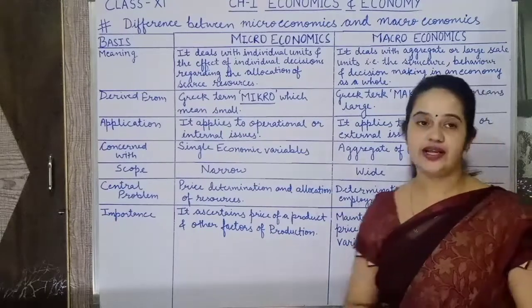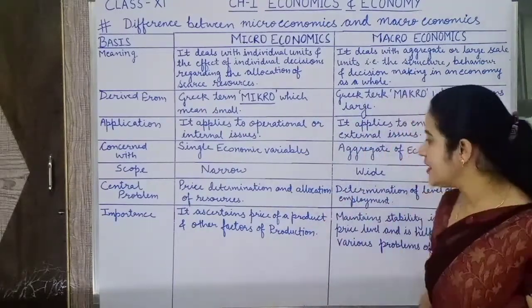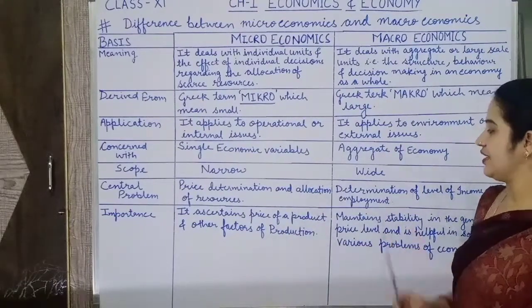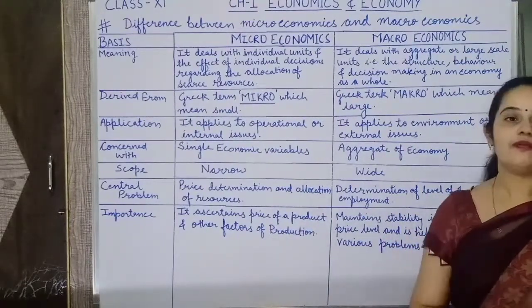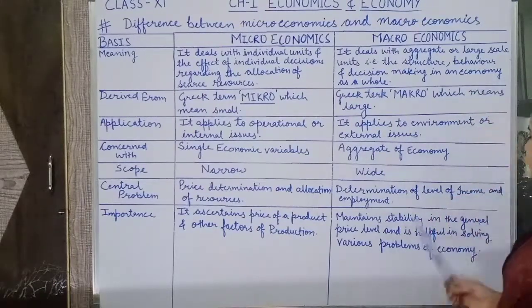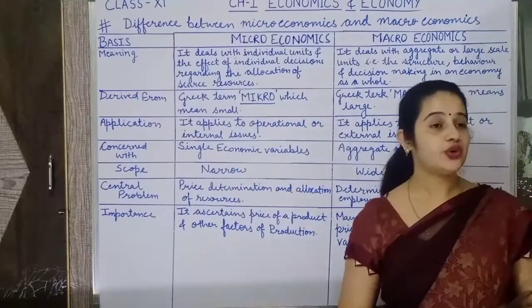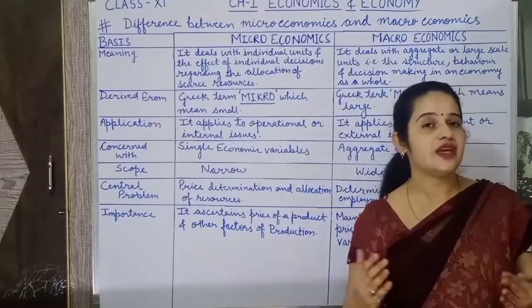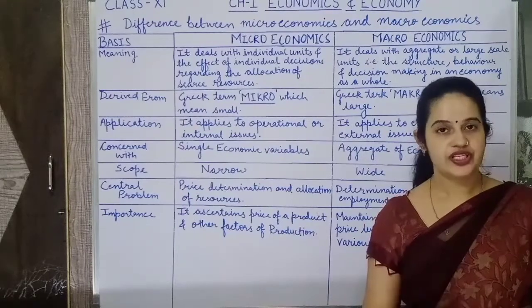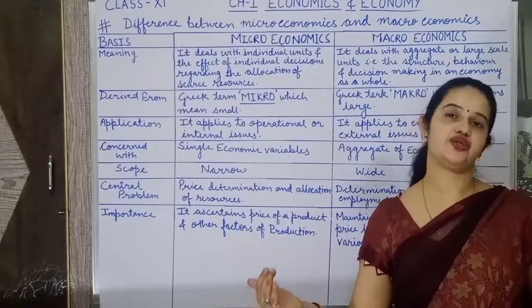Regarding importance, microeconomics ascertains the price of a product and other factors of production. Conversely, macroeconomics helps in maintaining stability in the general price level and tries to solve major economic problems such as poverty, unemployment, inflation, and deficit.